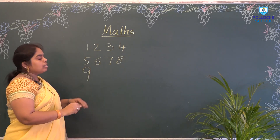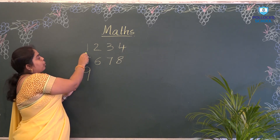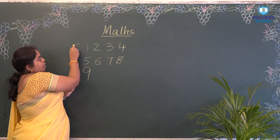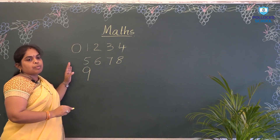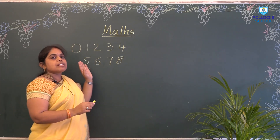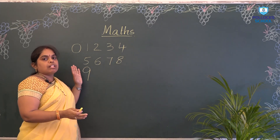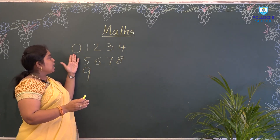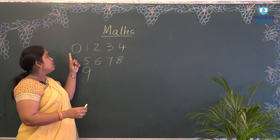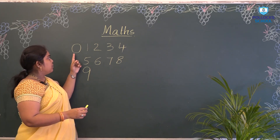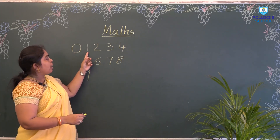We will learn only till 9. Before 1, there is one more number called 0. What does 0 mean? Nothing. There is nothing. 0 means nothing, but we have a number for nothing — that is called 0.